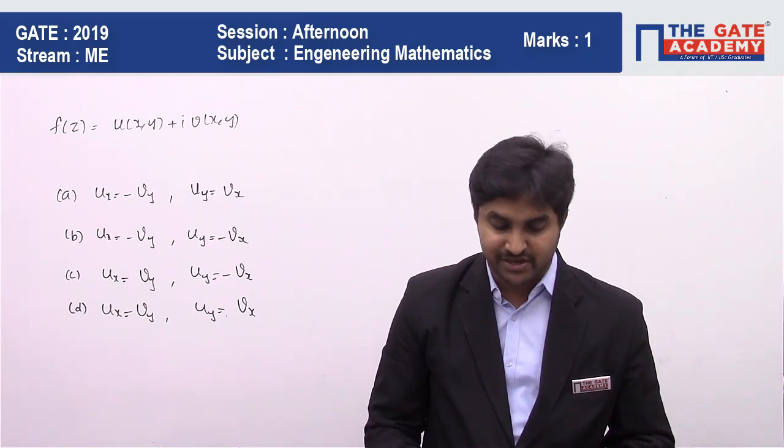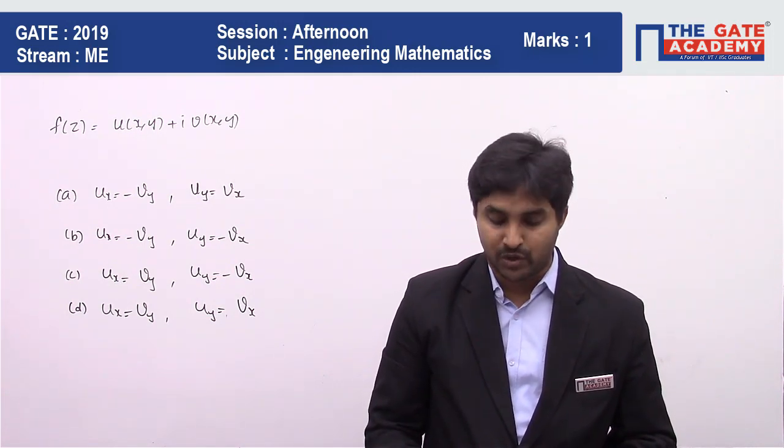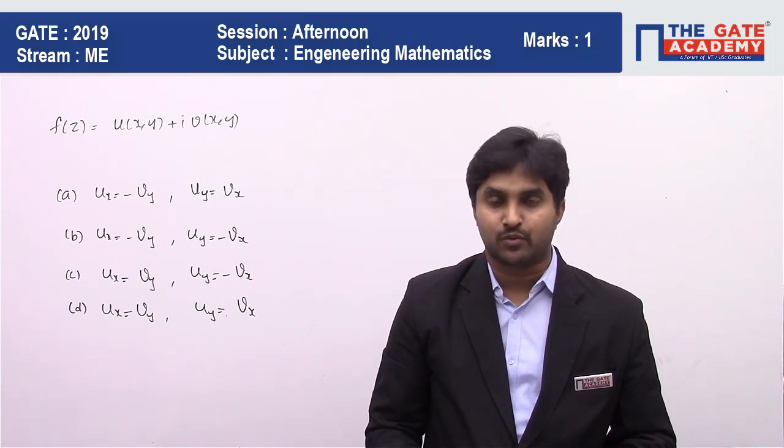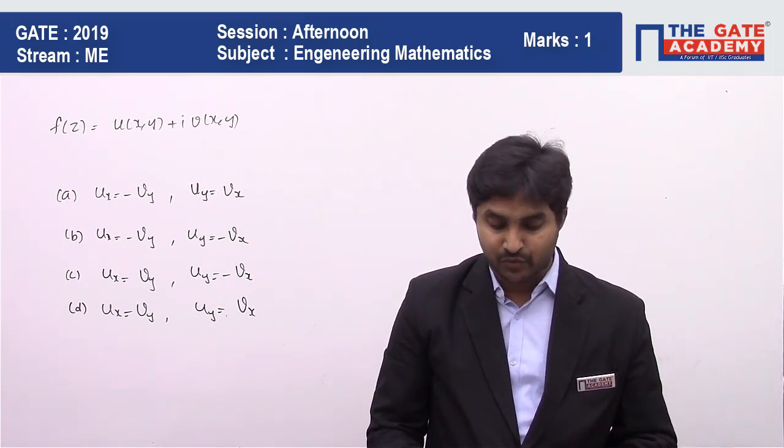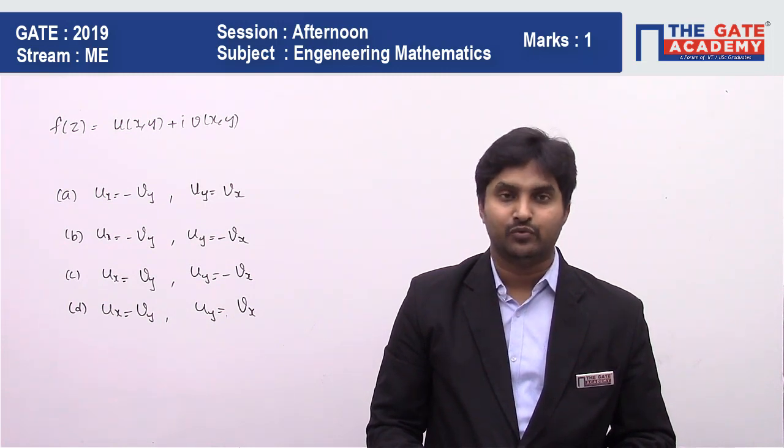Option C: ux equals vy and uy equals minus vx. Option D: ux equals vy and uy equals vx.